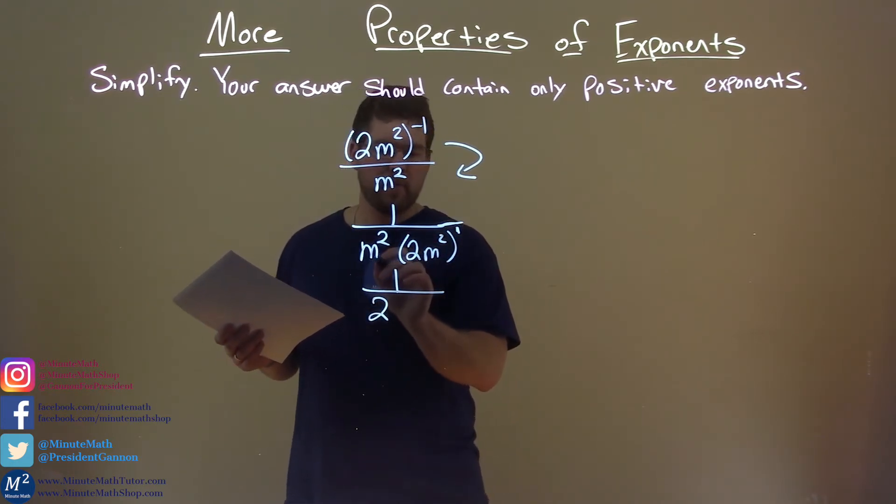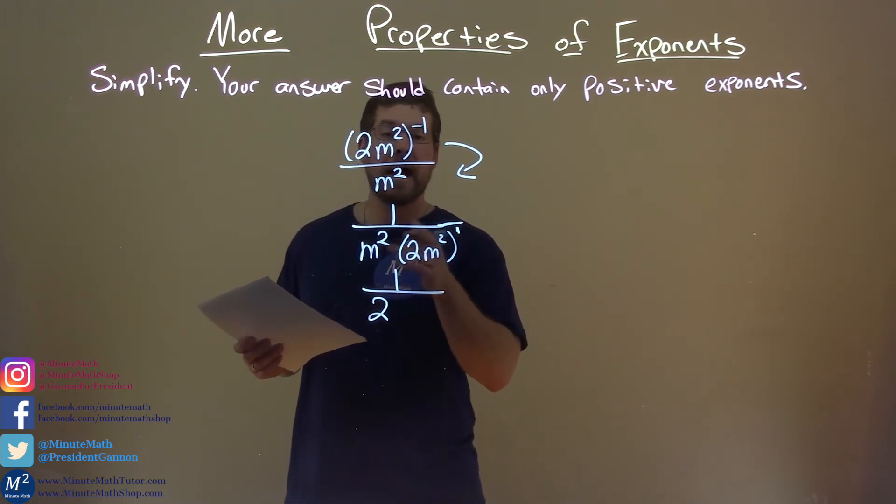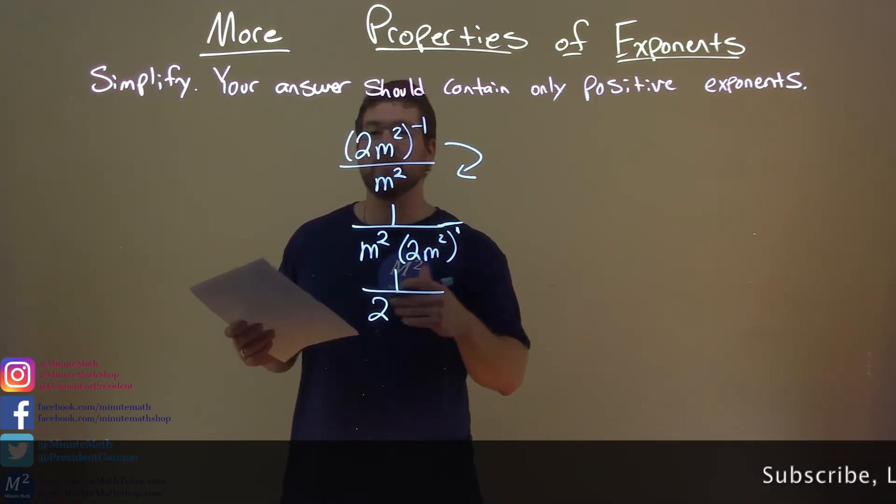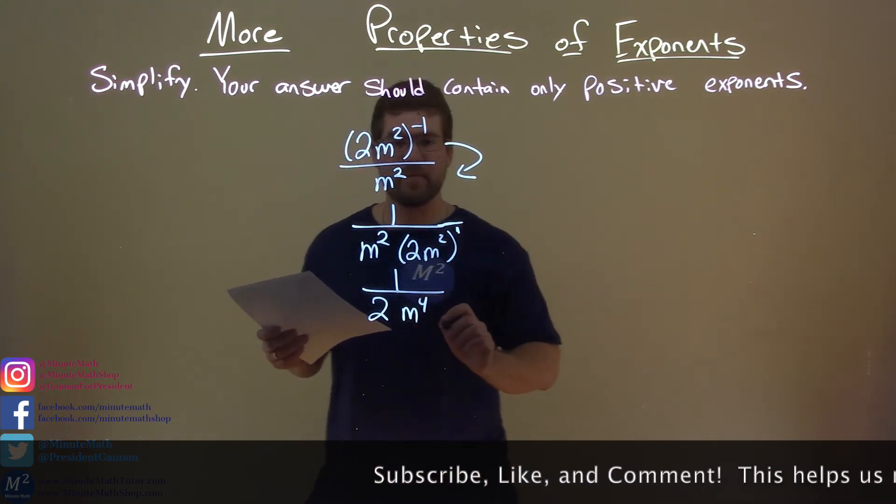But now our m's. We have m squared times m squared. Here, the same base, we add the exponents. 2 plus 2 is 4. You should know that. So we have m to the 4th power, and then we're done.